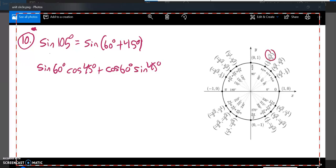Cosine of 60 degrees is one half. Look at 45, they're both root 2 over 2. So this would be root 3 times root 2, which is square root of 6, plus root 2, and they're both over 4.